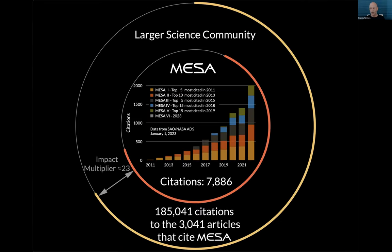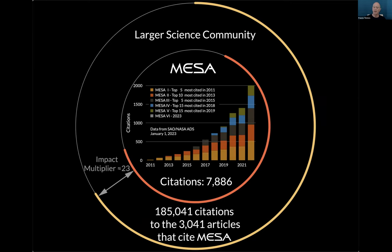Here are the bibliometrics for MESA in total. Looking at the innermost histogram from 2011 to 2022, 2022 is going to be a banner year for MESA — a definite jump in the number of citations. If you sum all those citations, it's currently about 8,000 citations or so as of January 1st. MESA 1 is one of the top five most cited articles of 2011, top 10 in 2013. These are all APJ supplement articles — significant, large papers describing the MESA software instrument.